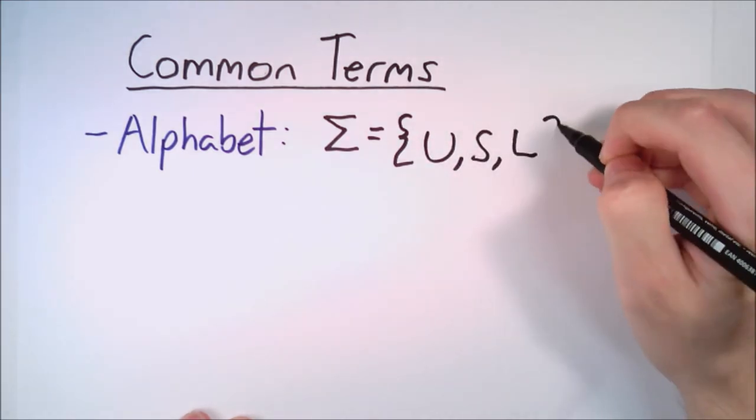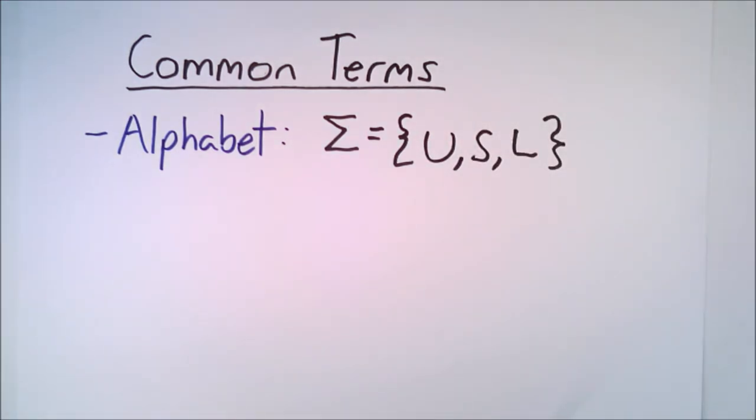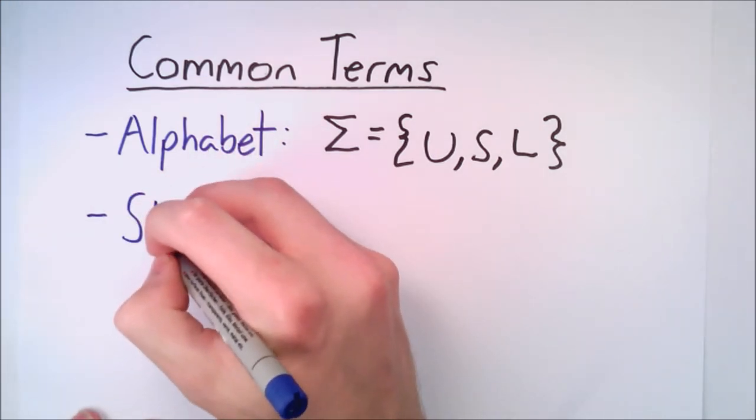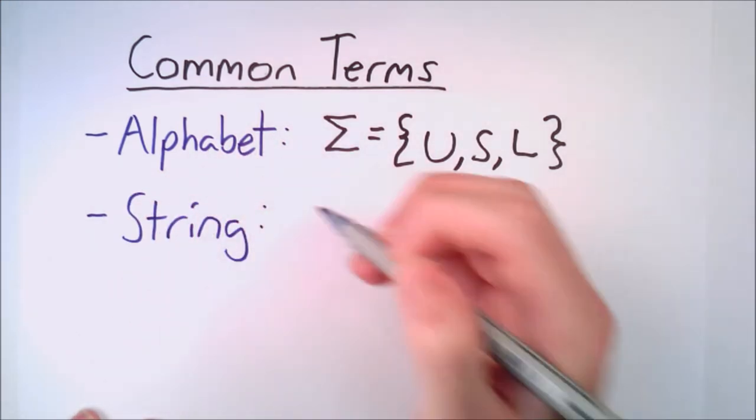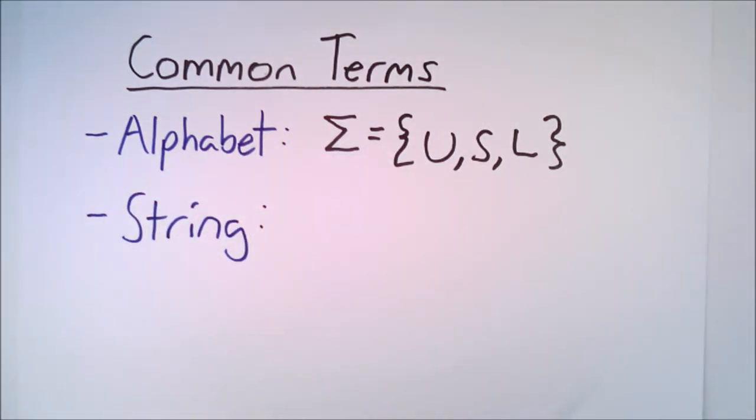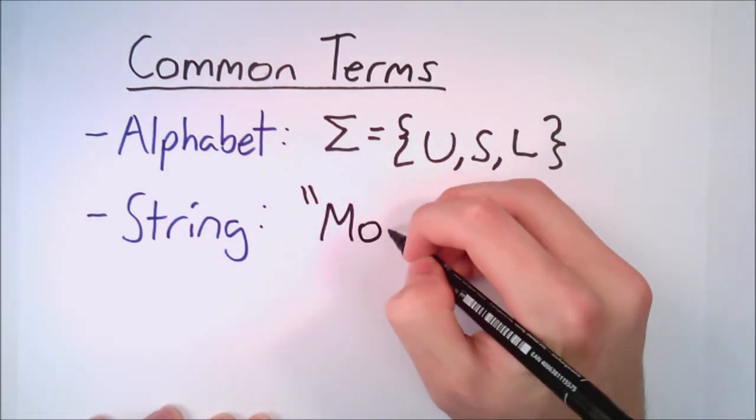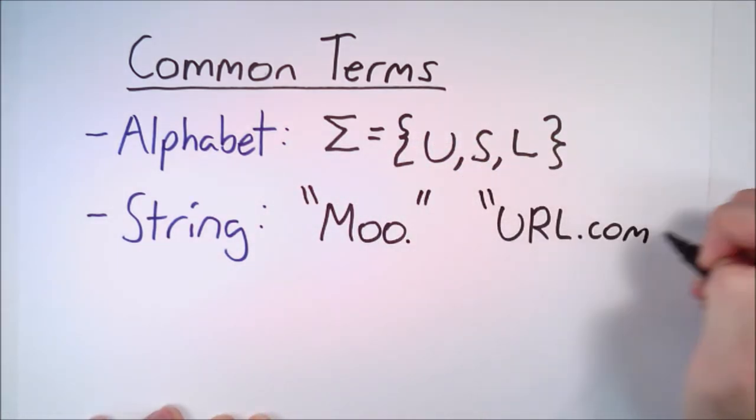The sentences we use to test this automaton are known as strings, which are sequences of inputs from our alphabet. Moo and url.com are examples of this.